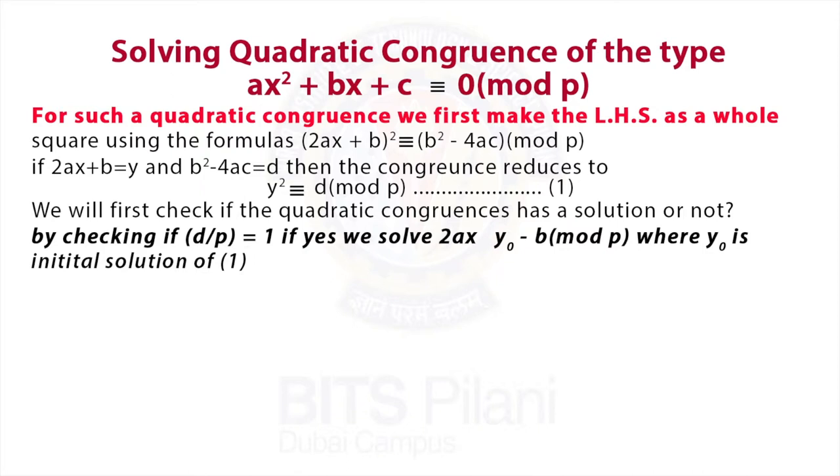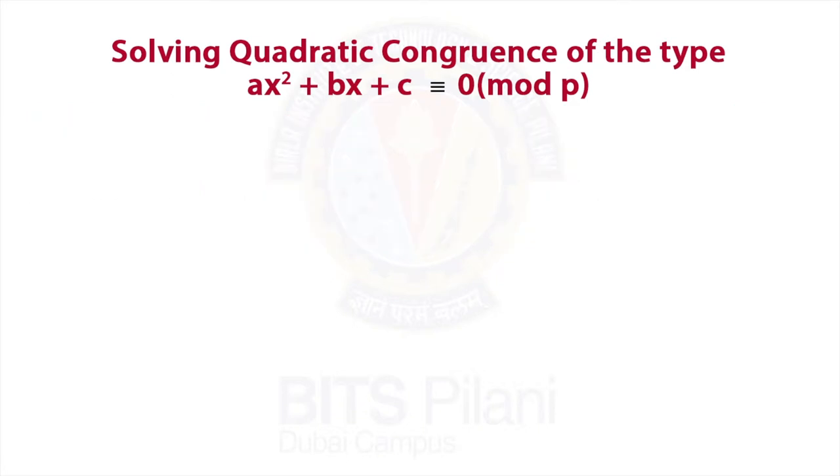Let's take an example and see how such congruences are solved. Solve the quadratic congruence 5x² - 6x + 2 ≡ 0 (mod 13). Here, a = 5, b = -6, and c = 2.